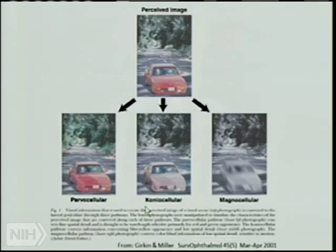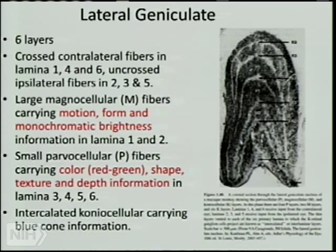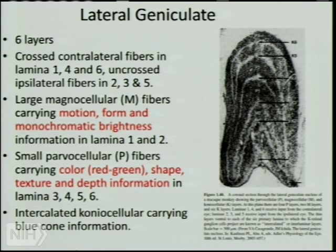There are different kinds of ganglion cells: parvocellular, coniocellular, and magnocellular. Parvocellular tend to be static — carrying color, high resolution, and form. Magnocellular is black and white, low resolution, but carries motion. Coniocellular is more for blue cones. The lateral geniculate has an intricate structure with six laminae. M fibers carry motion, form, and monochromatic brightness; parvocellular carries color, shape, texture, and depth information.